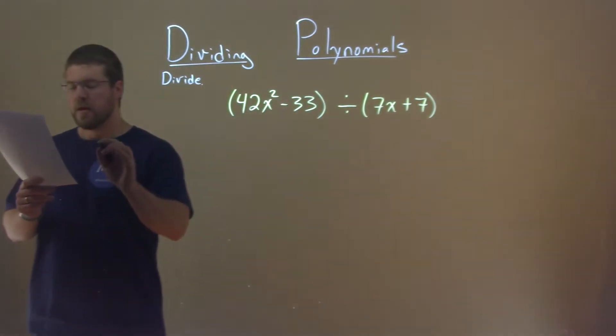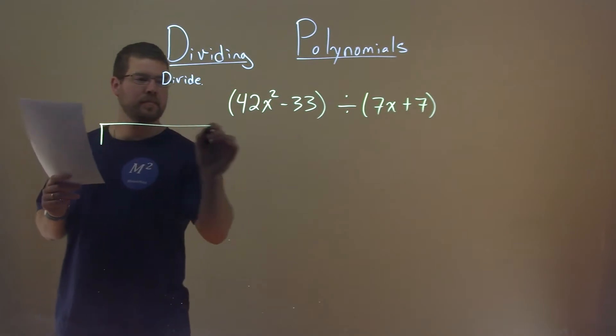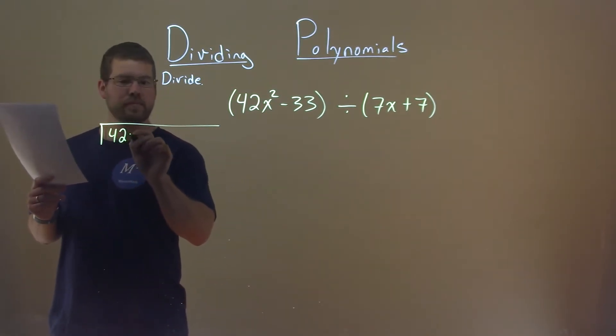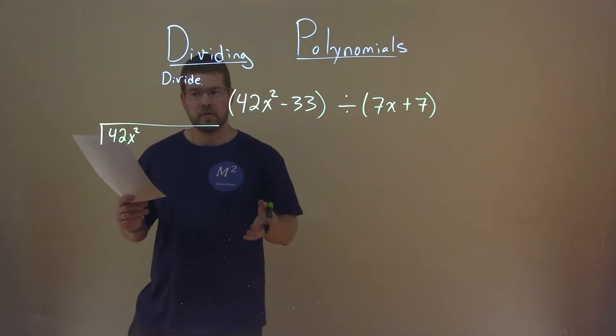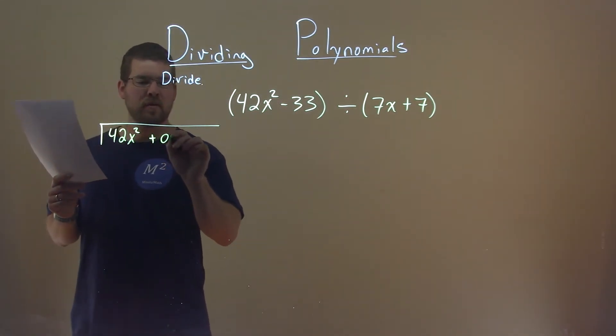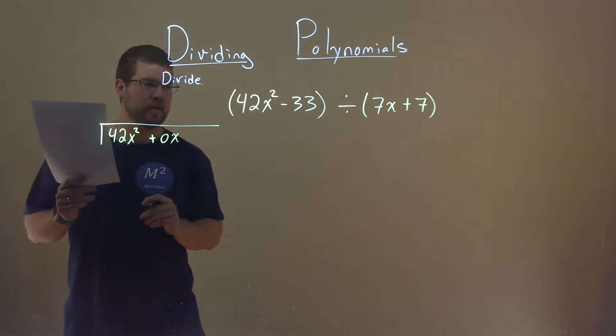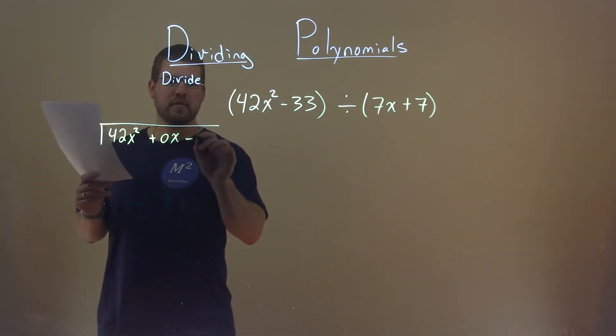Let's start with the first part. It's going to go inside here, 42x squared, but notice there's no x value. It just jumps to minus 33. So we're going to put a plus 0x here. It's important to have that place value. Then we can put a minus 33.